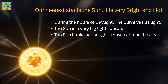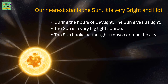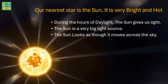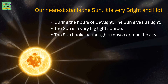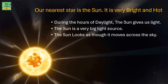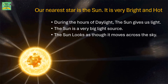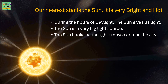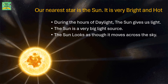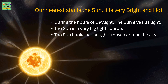Our nearest star is the sun. It is very bright and hot. During the hours of daylight, the sun gives us light. The sun is a very big light source. The sun looks as though it moves across the sky.